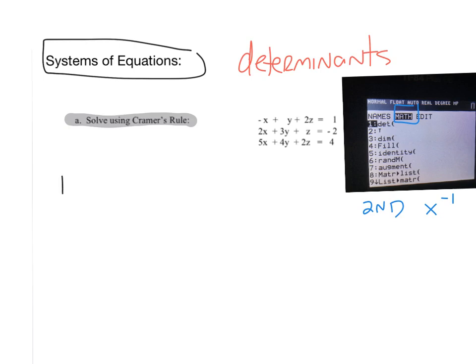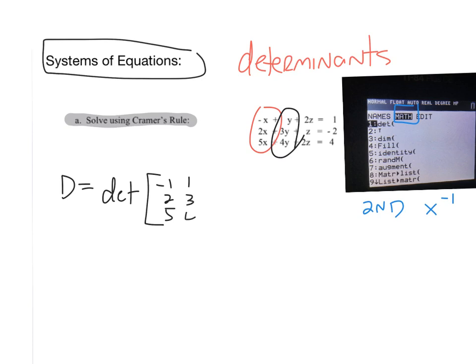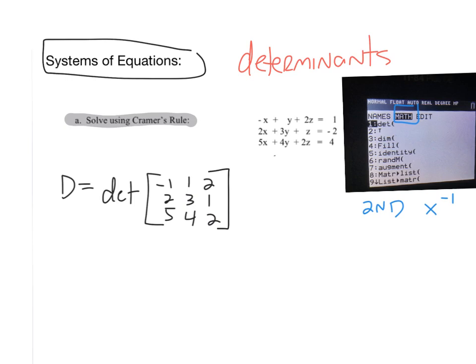We start off by finding D, which is the determinant of the coefficient matrix. We're going to take the coefficients of the x's, which are -1, 2, and 5; the coefficients of the y's, which are 1, 3, and 4; and the coefficients of the z's, which are 2, 1, and 2. Then we find the determinant of that coefficient matrix.